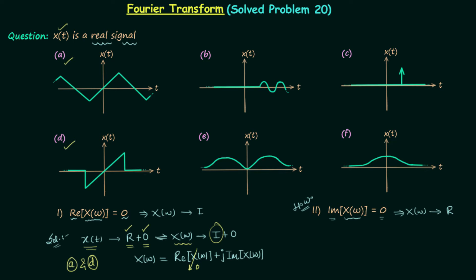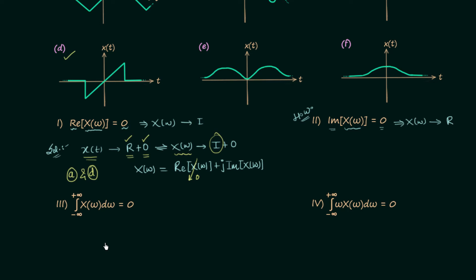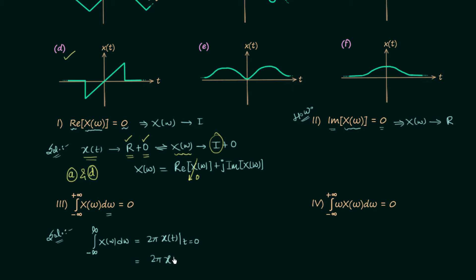Now we move to the third part. Here we need to find the time domain signals whose Fourier transform's integration with respect to ω from −∞ to +∞ is equal to 0. Using the Fourier transform property, the area under X(ω) equals 2π·x(0). So the integration equals 2π·x(0), and for this to be 0 we need x(0) = 0.